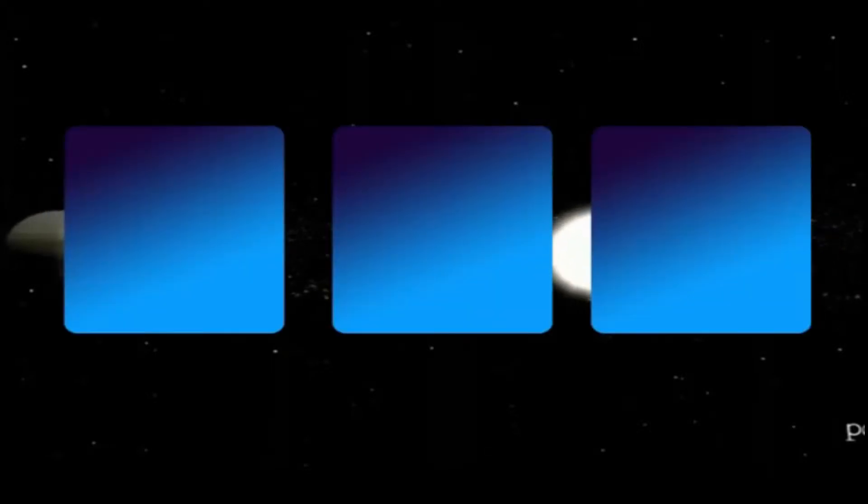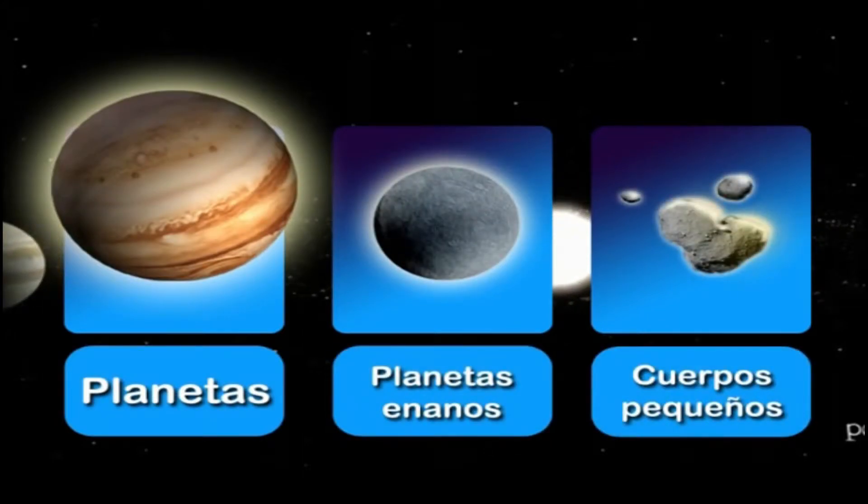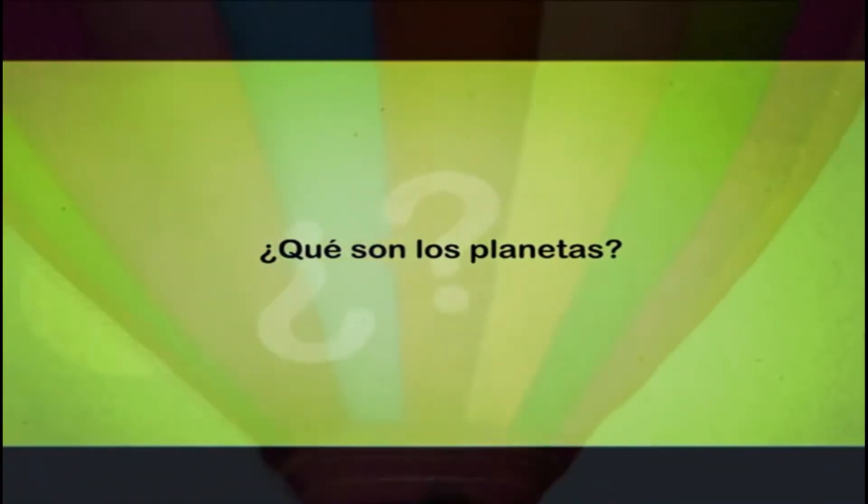Estos astros son los planetas, los planetas enanos y los cuerpos pequeños del Sistema Solar. ¿Qué son los planetas?